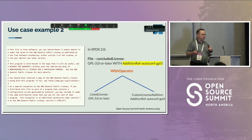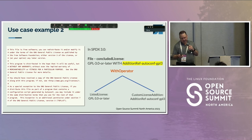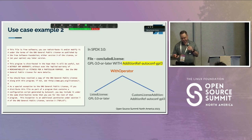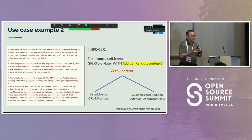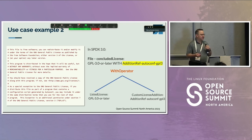What we can do now is recognize that this is a standard thing plus one extra little bit. What we have is the standard GPL 3.0 or later, and we use the WITH clause — which has always been there — but we have this new custom license addition, and it's this AdditionRef autoconf GPL 3.0. We're not using one of the standard license exceptions; this is a modified license exception. So instead of having a completely new custom license, we have a standard license with a custom license addition. It's much simpler and more straightforward to understand.